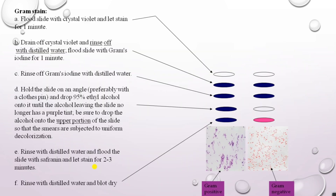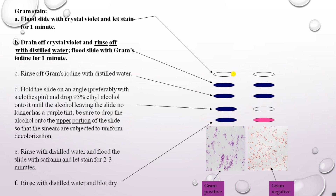We will now move to the detailed procedure of gram staining. Consider the smear on a plain slide — flood it with crystal violet and let it stain for one minute. After one minute, drain off the crystal violet and rinse the glass slide with distilled water. Then flood the slide with the mordant, Gram's iodine, again for one minute. Keep it undisturbed and at the end of one minute rinse off the Gram's iodine with distilled water.